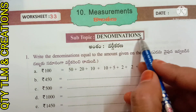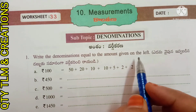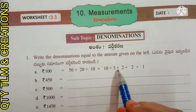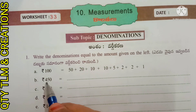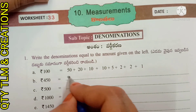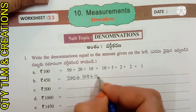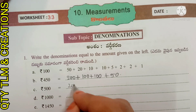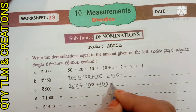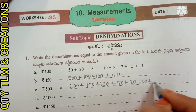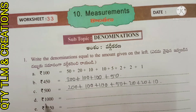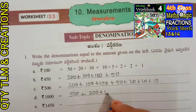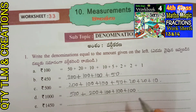Next, worksheet number 33, subtopic denominations. First question: write the denominations equal to the amount given. A) 100 rupees equals 50 plus 20 plus 10 plus 5 plus 2 plus 2 plus 1. B) 450 rupees: 200 plus 100 plus 100 plus 50. C) 500 rupees: 200 plus 100 plus 100 plus 50 plus 20 plus 20 plus 10. D) 1000 rupees: 500 plus 200 plus 100 plus 100 plus 100.